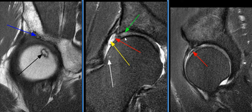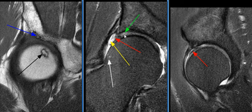There is synovial hypertrophy superficial to the torn labrum. There is mild acetabular spurring and sclerosis, along with chondral deterioration.